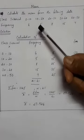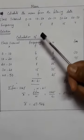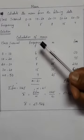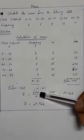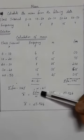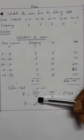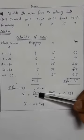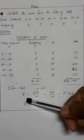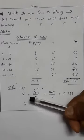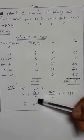Direct method, shortcut method, step deviation method. I will solve this question using the direct method. Direct method mean formula: X bar equals sigma FM divided by N.